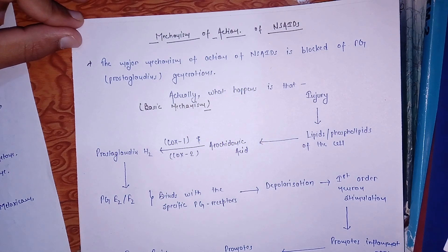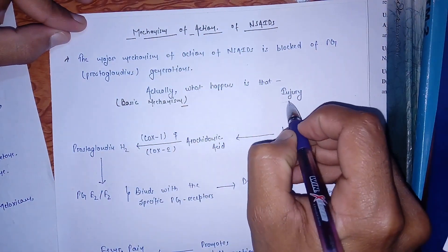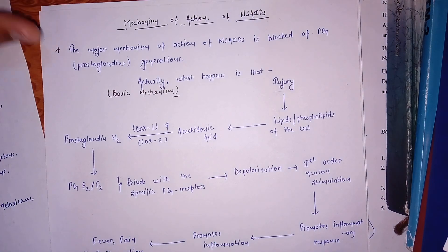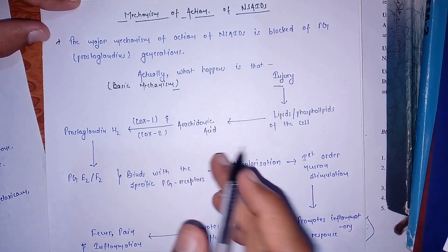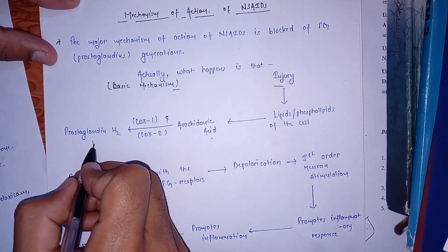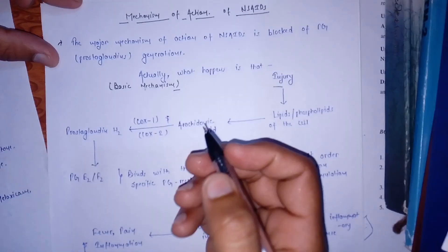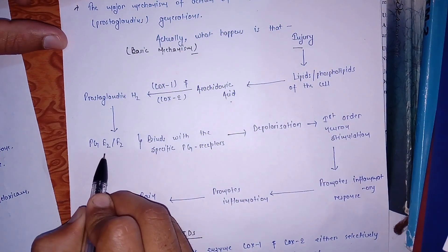The major mechanism of action of NSAIDs is the block of prostaglandin generation. When an injury occurs, the lipids and phospholipids of the cells at the site of injury are converted into arachidonic acid. This arachidonic acid is further converted into prostaglandin H2 in the presence of cyclooxygenase-1, and in cases of trauma or stress, in the presence of cyclooxygenase-2.